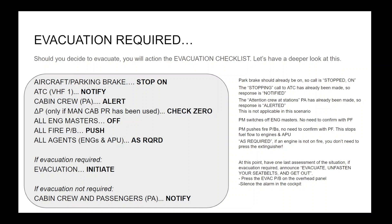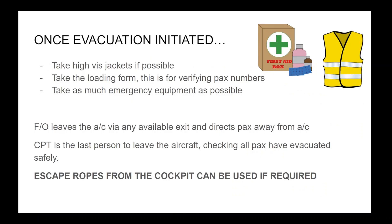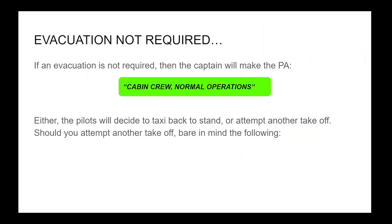Silence the alarm in the cockpit. If evacuation is not required, make the PA to cabin crew and passengers: 'cabin crew, normal operations.' Once the evacuation has been initiated, take high-vis jackets if possible, take the loading form for verifying passenger numbers, and take as much emergency equipment as possible. The first officer leaves via any available exit and directs passengers away from the aircraft. The captain is the last person to leave, checking all passengers have evacuated safely.